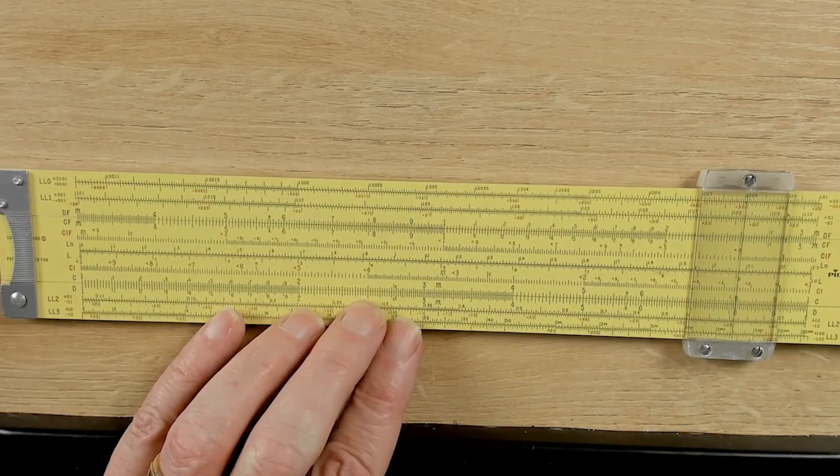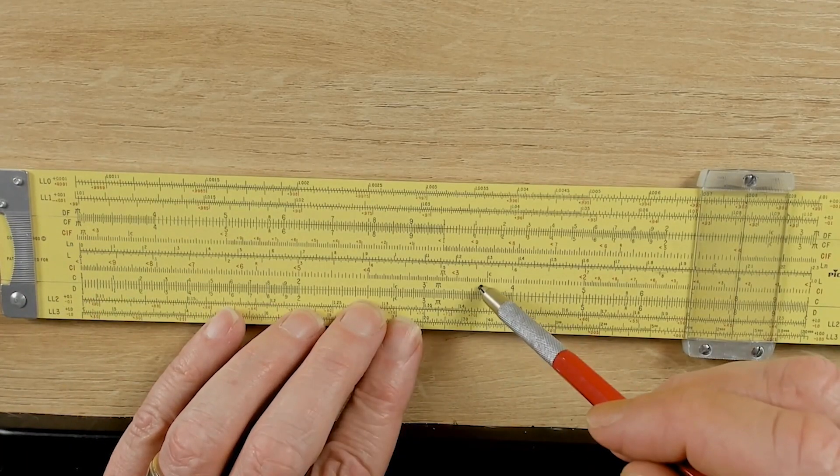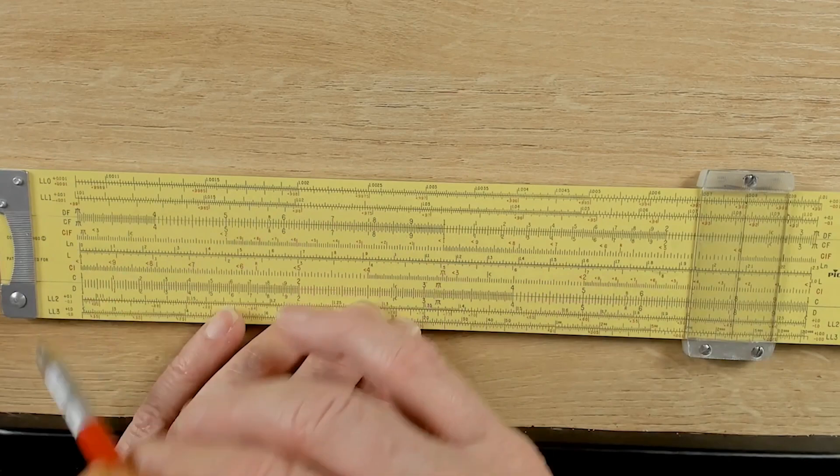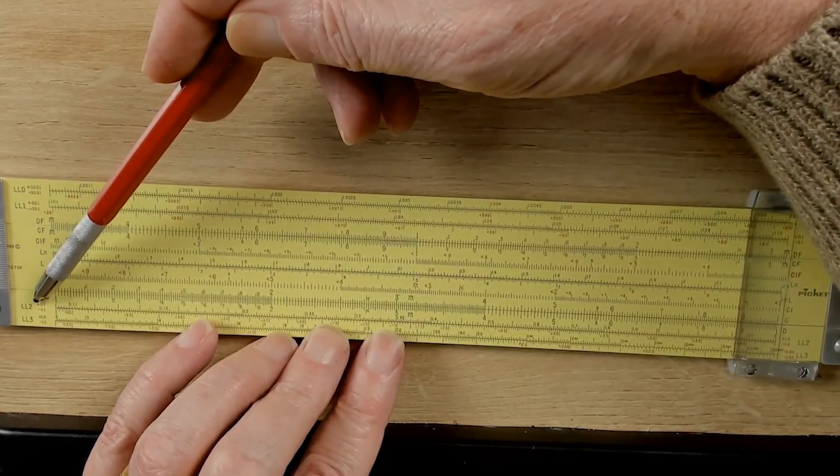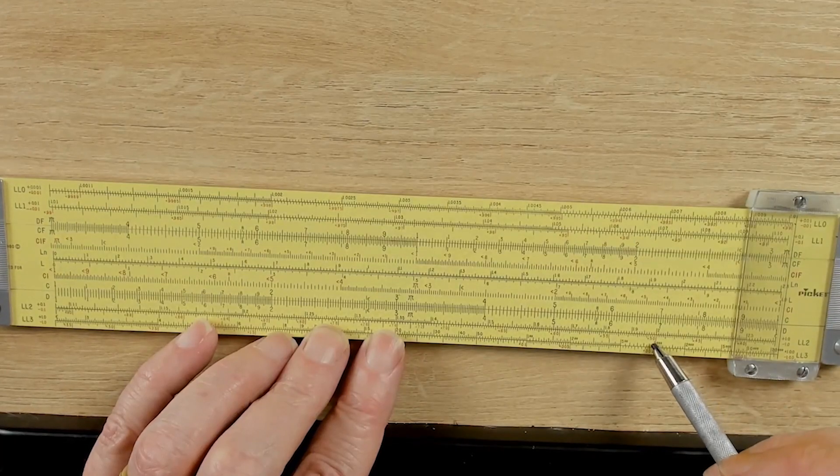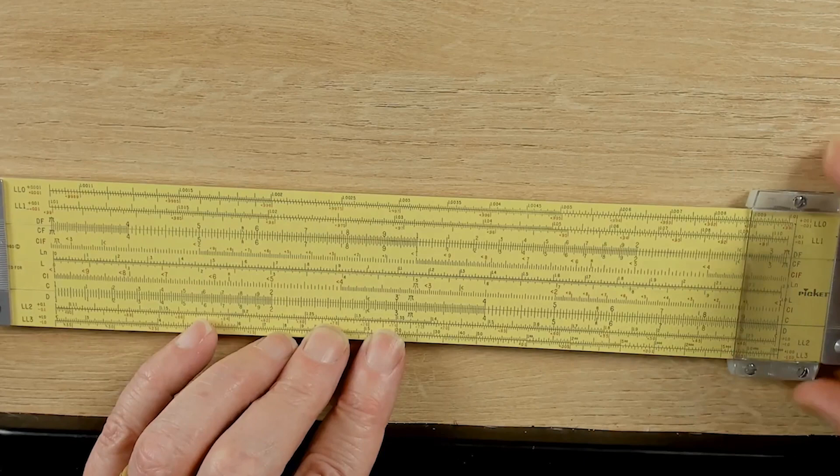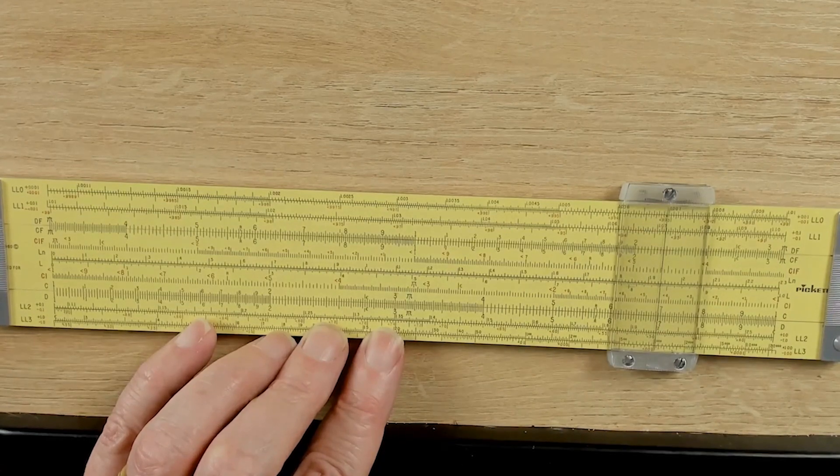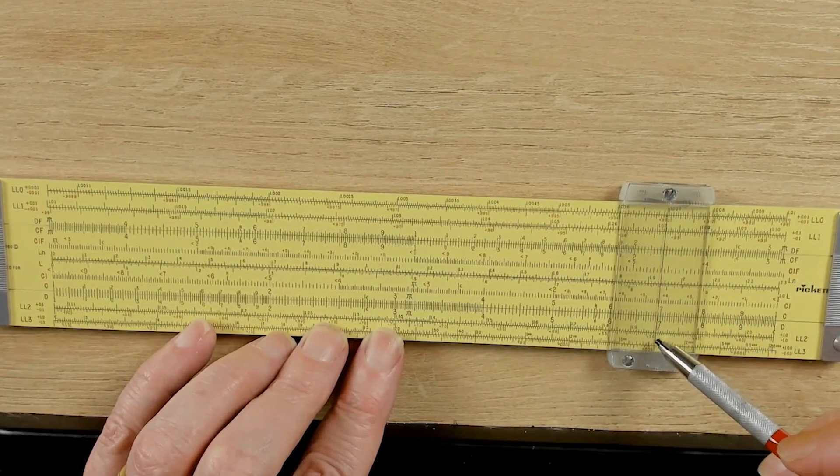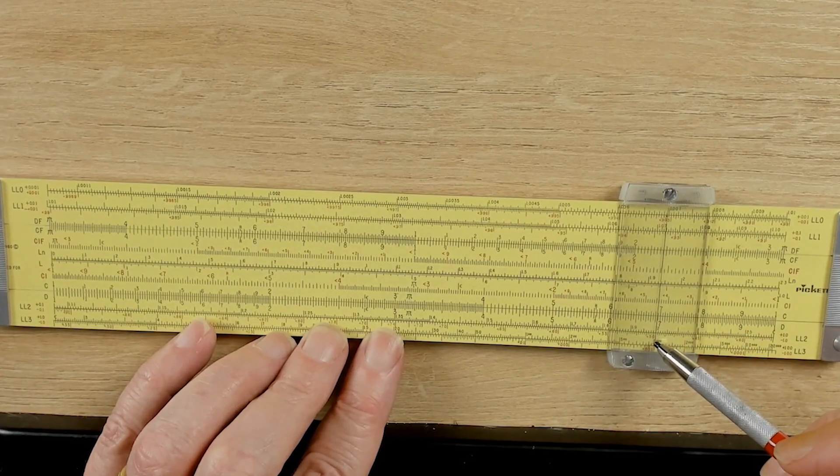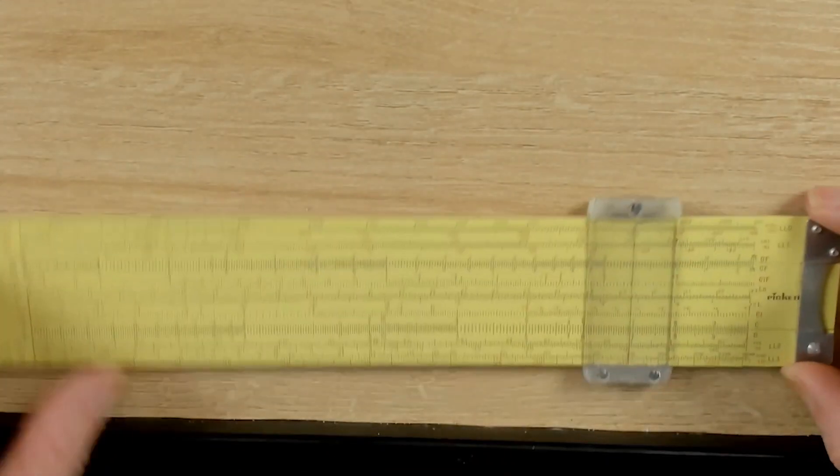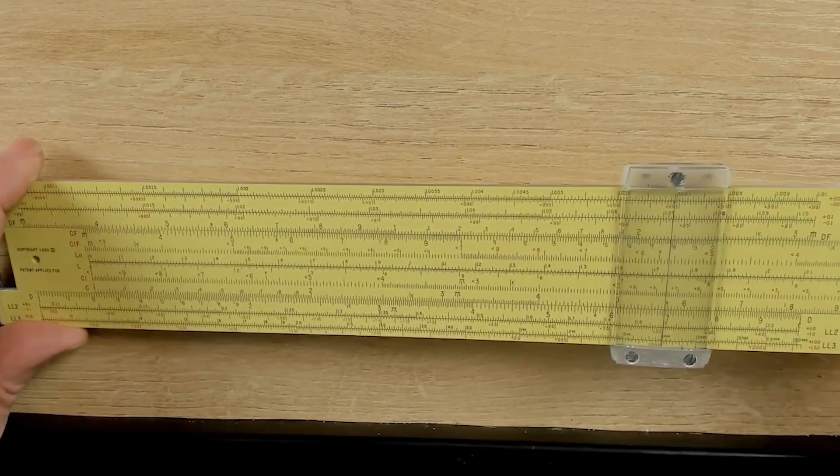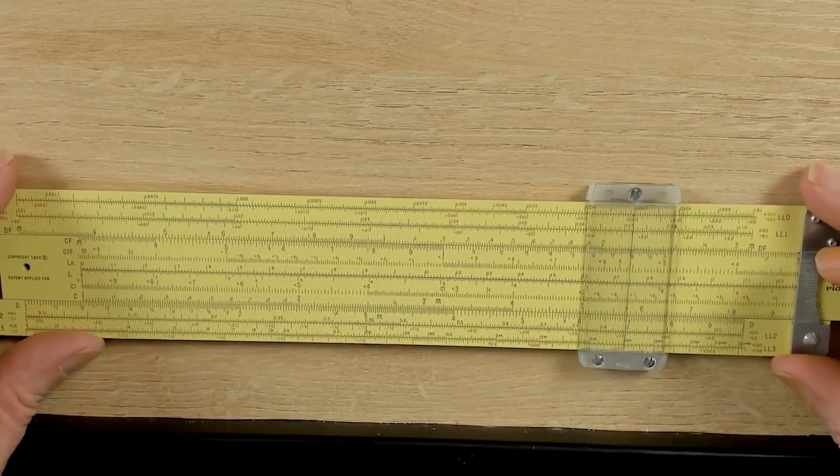Now, the log-log scales work in a similar fashion. We're going to read our answer on the C scale, and we're going to find our logs on the corresponding log scale. If you look at the log-log scale, you'll see right here, it's 0.50. Now, we're going to use this to figure out carbon-14 dating. Now, the way you do carbon-14 dating is that you take the half-life, which will be 0.50 on the log-log scale, and you put the half-life in years above it.